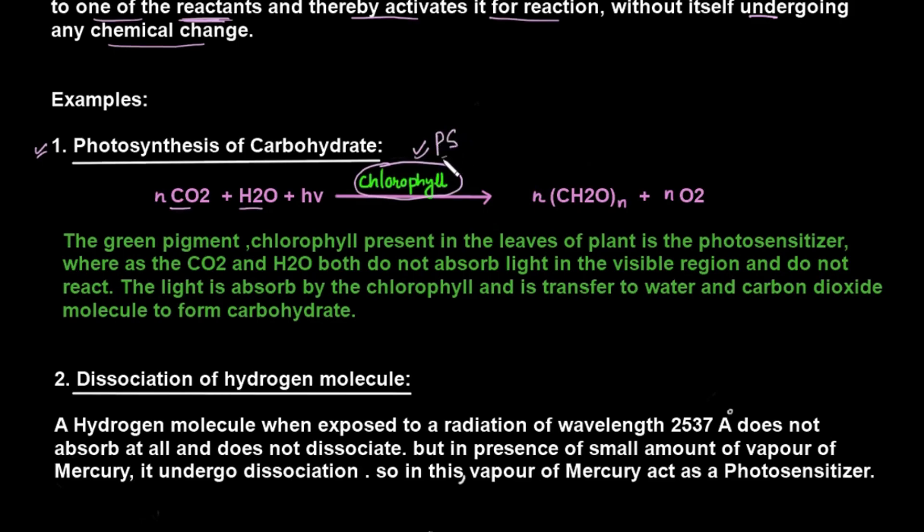So this chlorophyll acts as a photosensitizer. Chlorophyll's work is to absorb radiations. After absorbing the radiations from the sunlight, this chlorophyll provides the energy to the carbon dioxide and H2O molecules, the water molecules. And after that, carbon dioxide and water molecule react and finally form the carbohydrate.